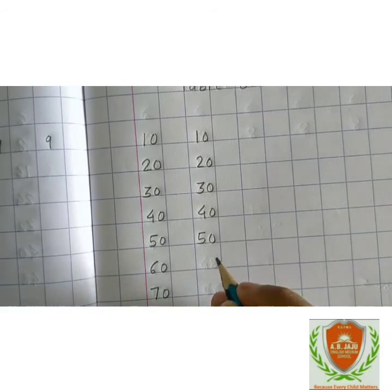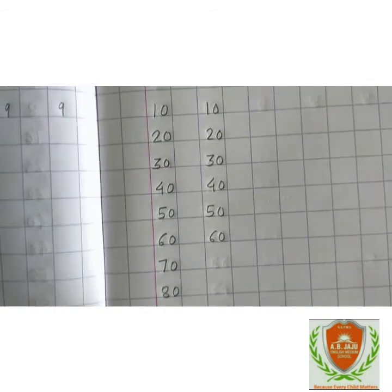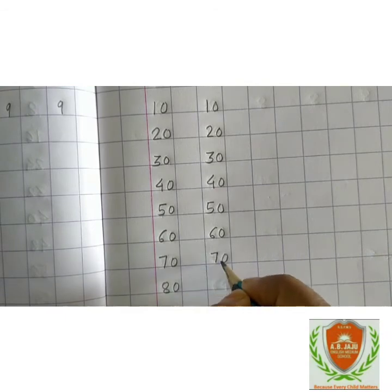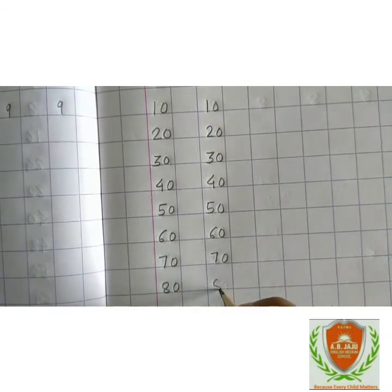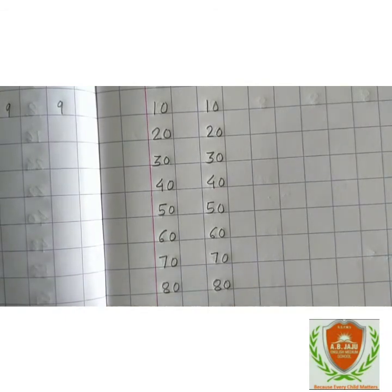10 sixes are 60, 10 sevens are 70, 10 eights are 80, 10 nines are 90, 10 tens are 100.